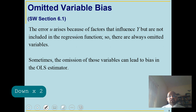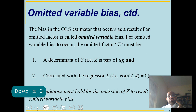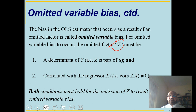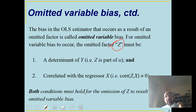Omitted variable bias occurs when two conditions are met. First, a variable z must be a determinant of y. Second, z must be correlated with the variables on the right-hand side of the equation — that is, it is related with x. If both conditions are satisfied and the variable is not included in the model, this will lead to omitted variable bias.